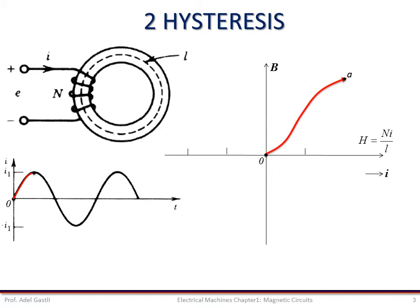If the magnetic flux intensity H is now increased by slowly increasing the current I, the flux density will change according to the curve 0A. The point A corresponds to a particular value of the magnetic flux intensity H1, corresponding to the maximum current value I1.